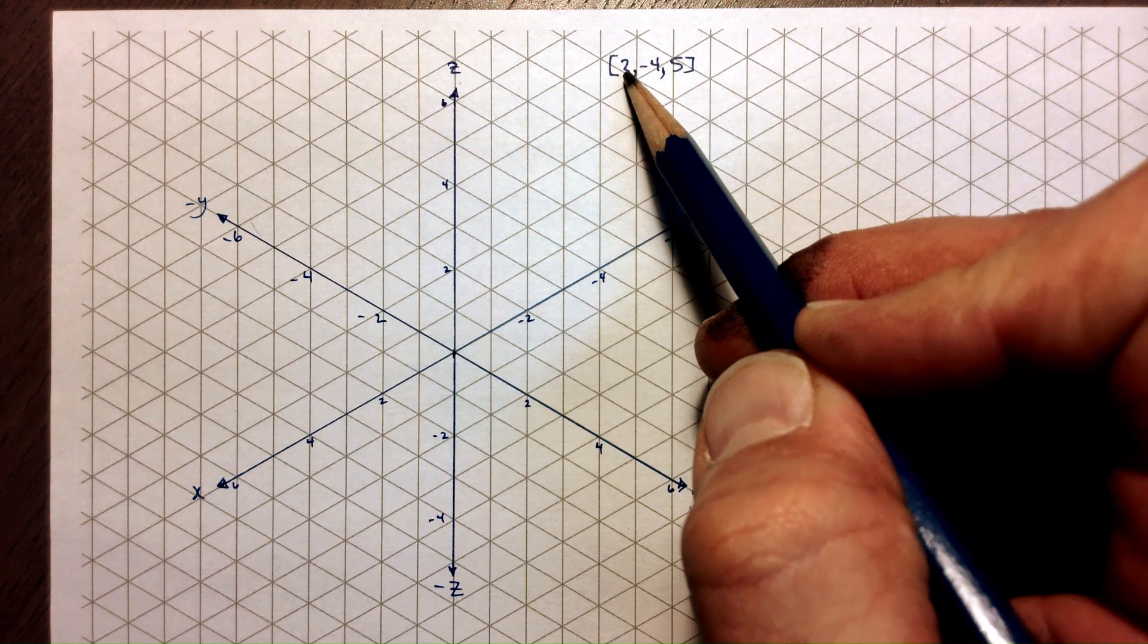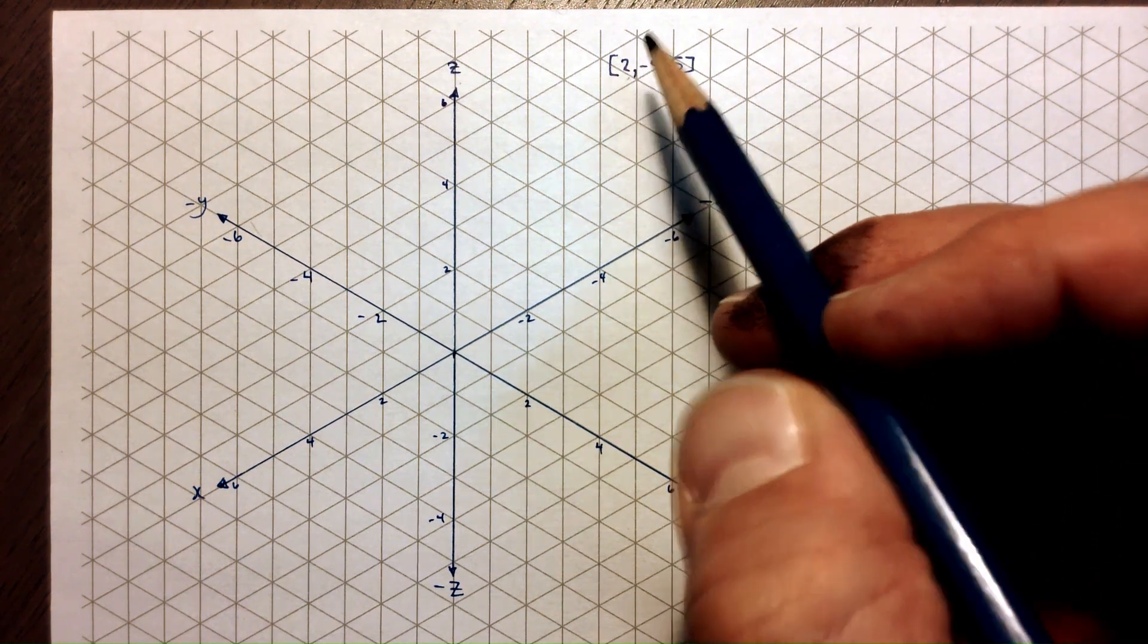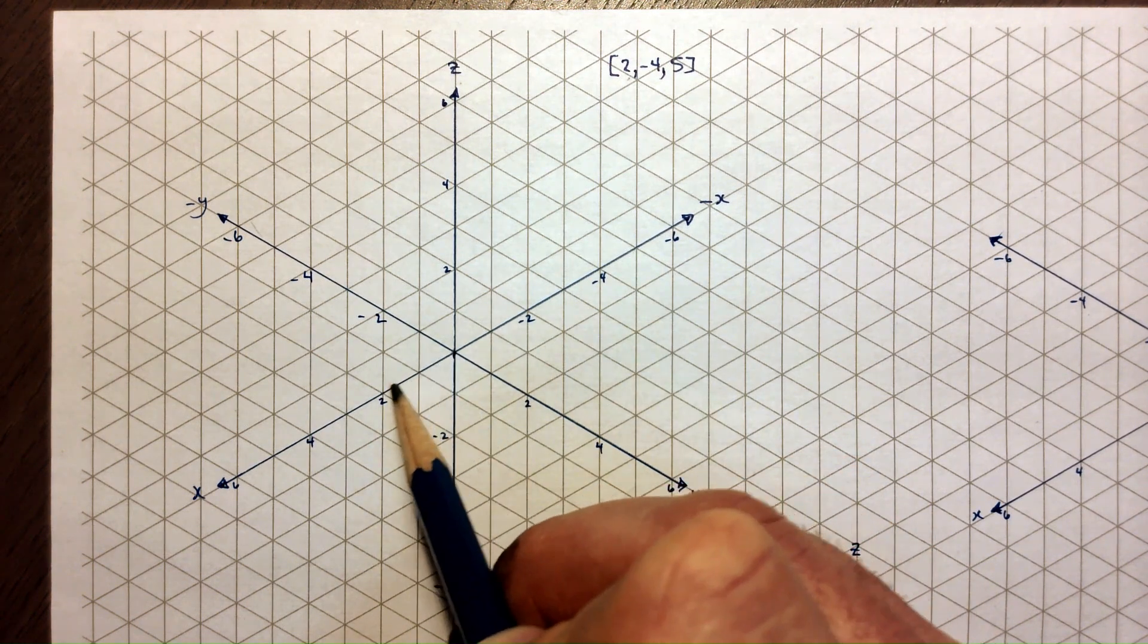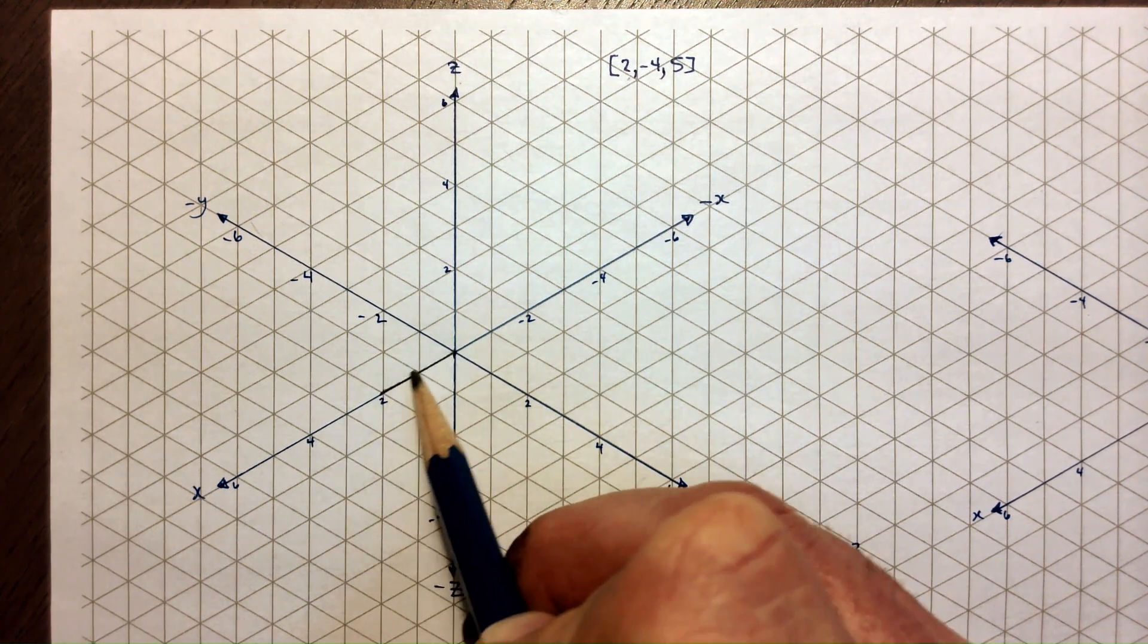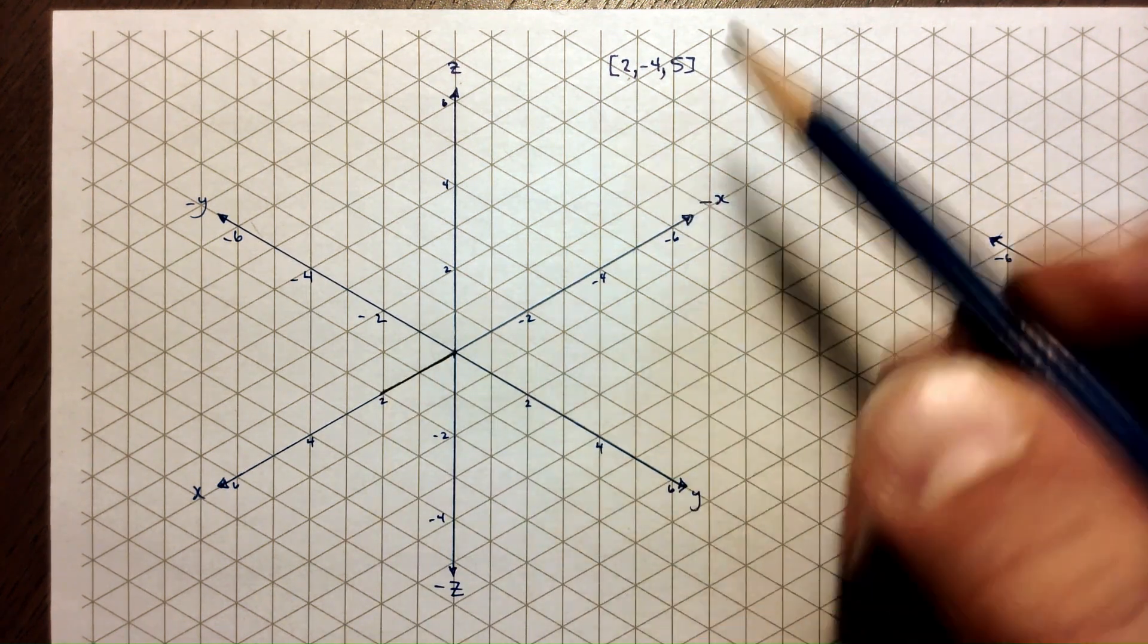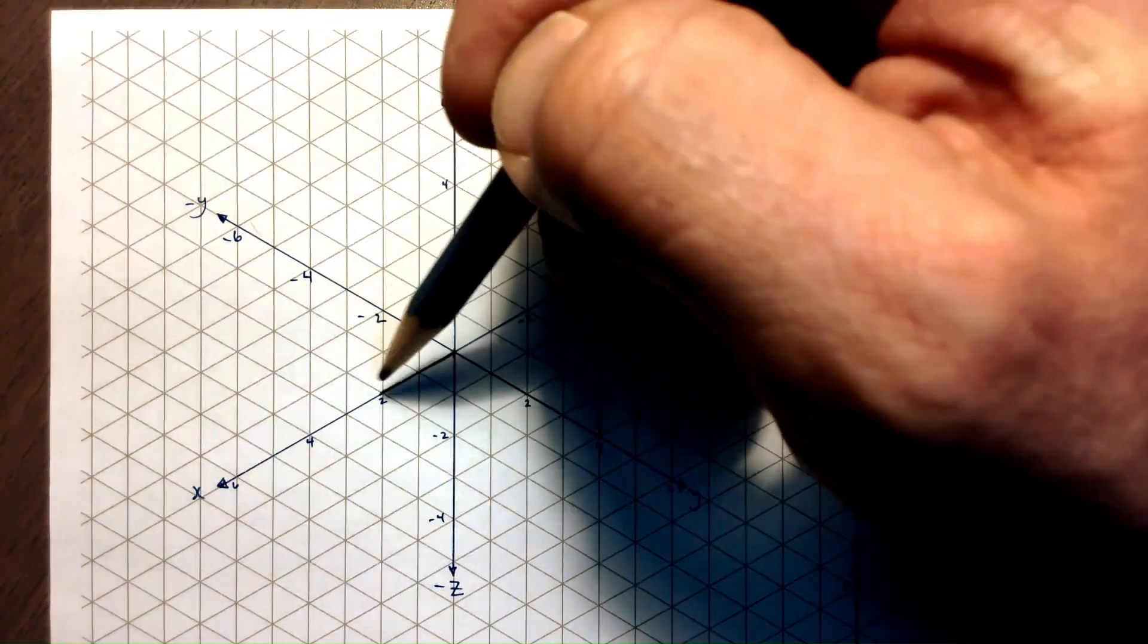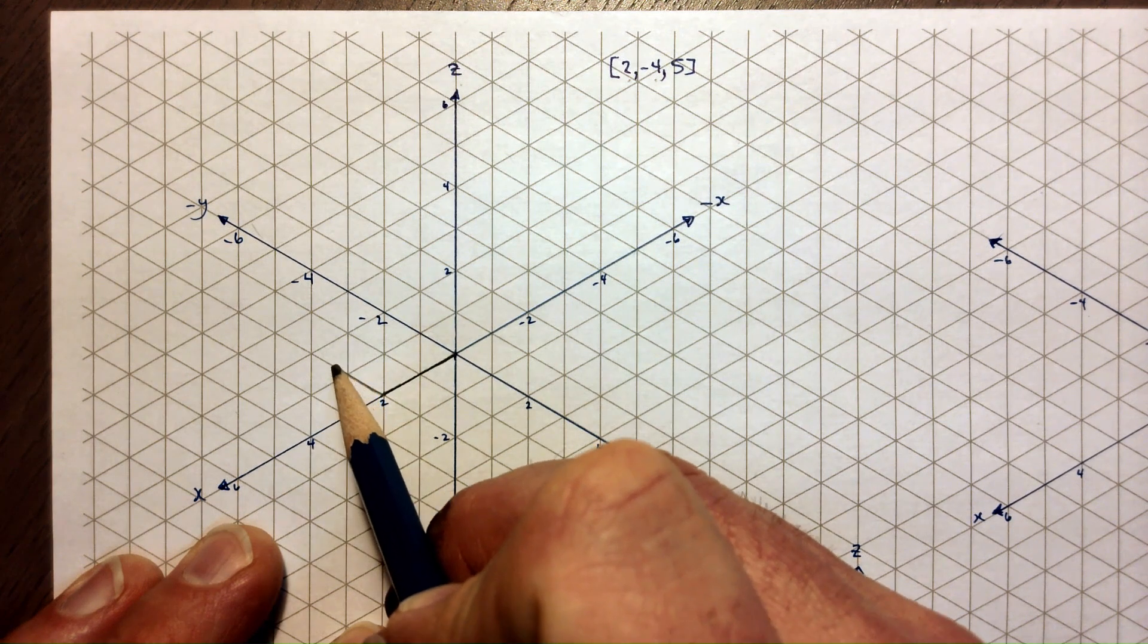So the way we do this is by looking at each of these coordinates separately. So let's start with the x being 2. So I'm going to kind of sketch this in with a pencil here. From there, I'm going to follow y negative 4. That's moving kind of backwards here.